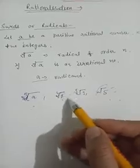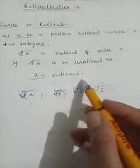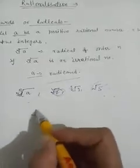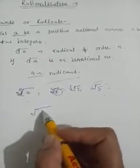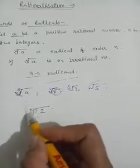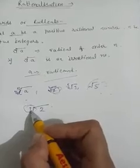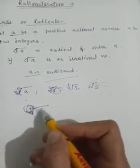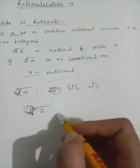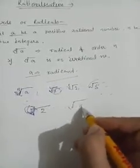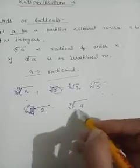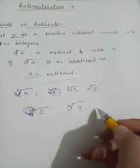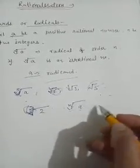The number written under the radical symbol is called the radicand. If we write a to the power of n, this is the nth order — whatever index is written here, that gives us the order. So this is called the nth root of a.